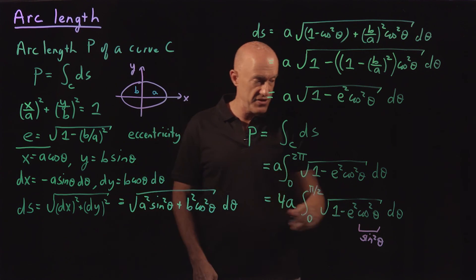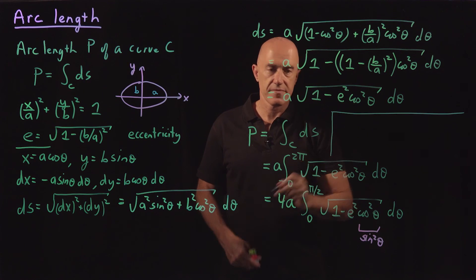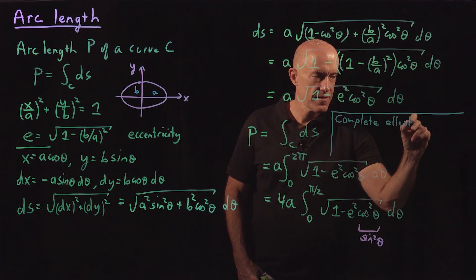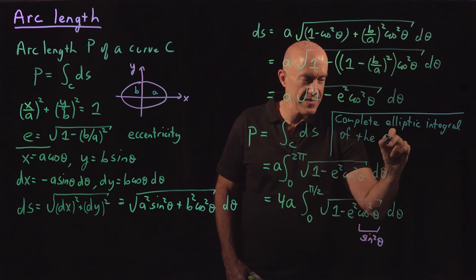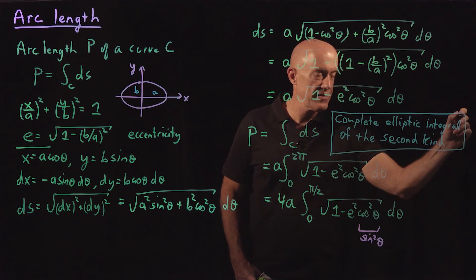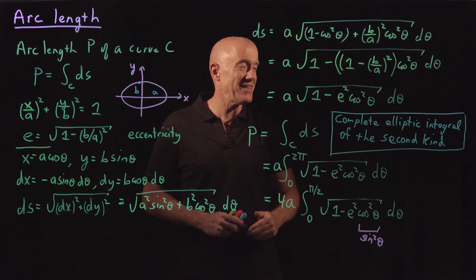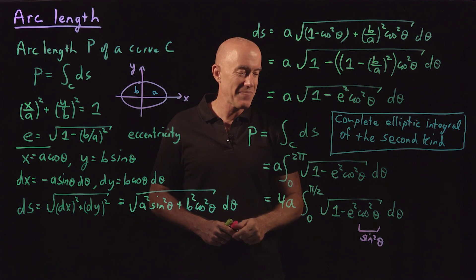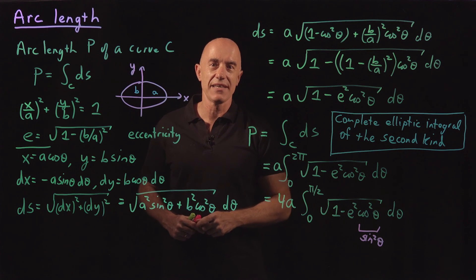It turns out this integral cannot be done analytically, and it has a very nice name: this is called the complete elliptic integral of the second kind. That opens up a lot of questions — what's the incomplete elliptic integral? What's the elliptic integral of the first kind? There's a lot of math in this formula, but it all comes from just computing the perimeter of an ellipse. I'm Jeff Chasnoff — thanks for watching, and I'll see you in the next video.